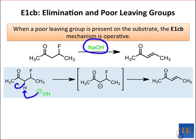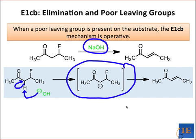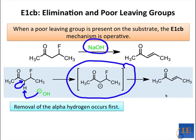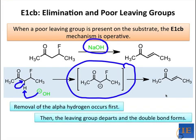Instead, a discrete anionic intermediate is observable: the conjugate base of the substrate. The E1CB mechanism involves deprotonation of the substrate alpha to the leaving group, followed by elimination to form the double bond and kick off the leaving group. Like E2 and E1, the major product of the E1CB reaction often features the most stable double bond.